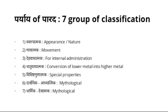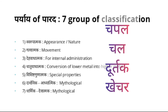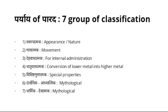Gatyatmaka — based on its movement — it has synonyms like Chapala, Chala, Durthaka, and Kechara. These names reflect its tendency to always move, even without any action or target. Since it always tends to move, it has synonyms like Chapala, Chala, Durthaka, and Kechara.